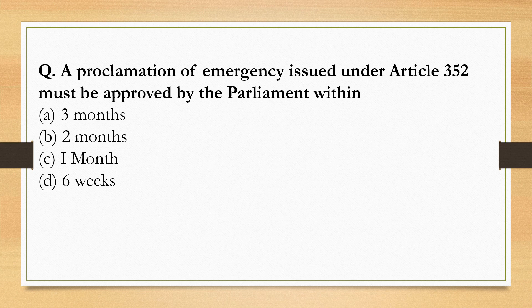A proclamation of emergency issued under Article 352 must be approved by the Parliament within one month of its declaration. Article 352 makes provision for the national emergency imposed by the President of India, and it must be approved within one month of its declaration.